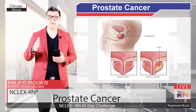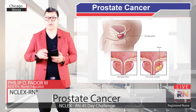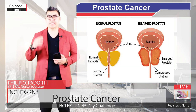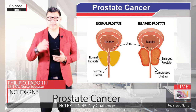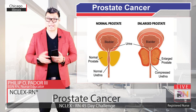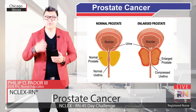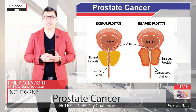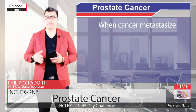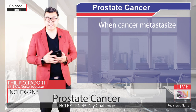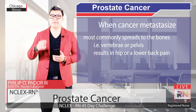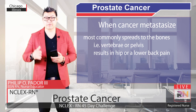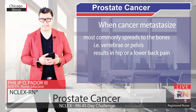As a result, these tumors can grow quite large before they cause problems with urination. Over time, if the cancer compresses or invades the urethra or bladder, it can cause difficulty urinating, bleeding, and pain with urinations and ejaculations. If the cancer becomes metastatic, it most commonly spreads to the bones, like the vertebrae or pelvis, resulting in hip or lower back pain.